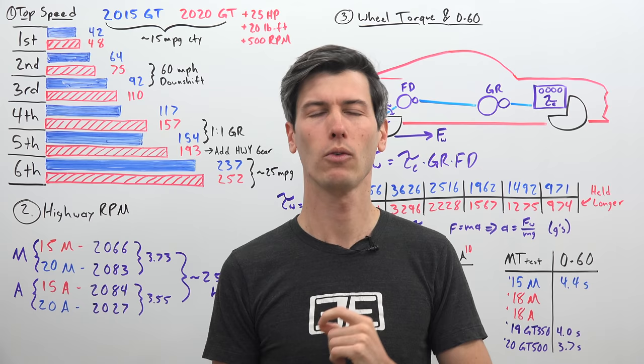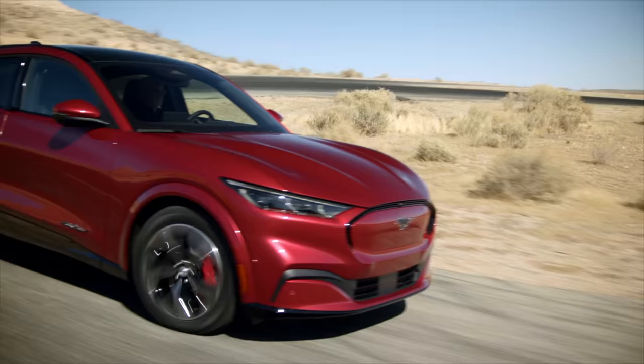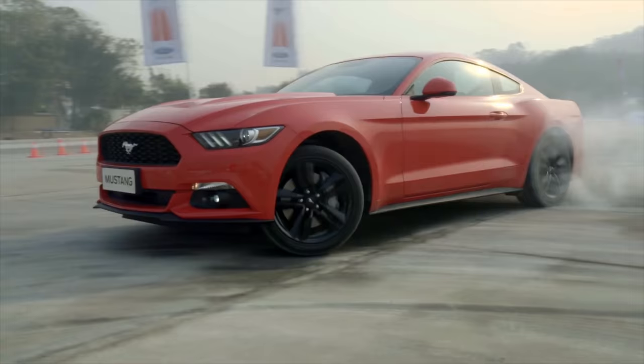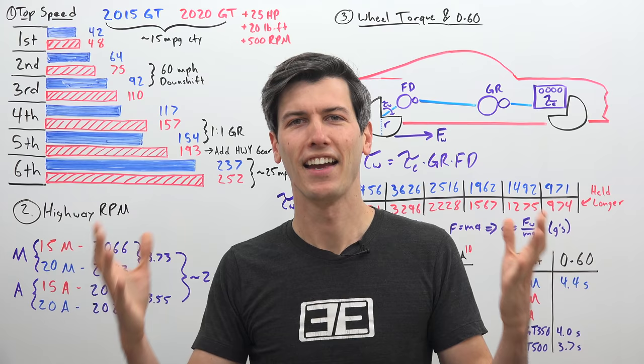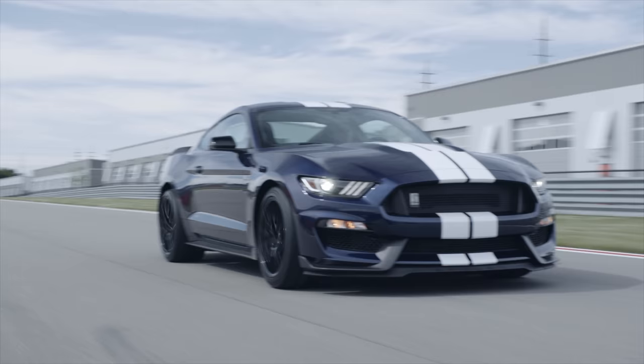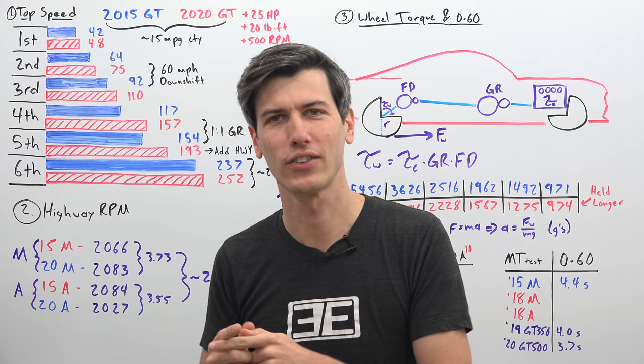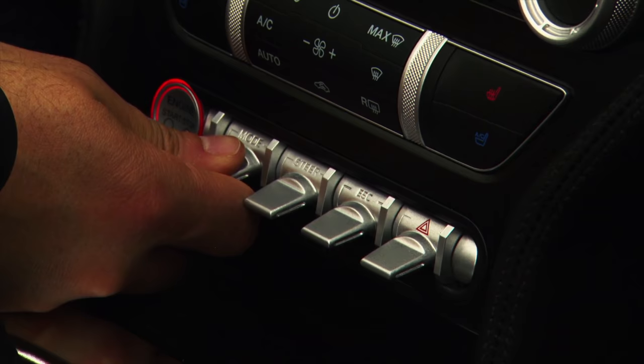So then you might think, well, what about a Fiesta ST, also a super fun car, manual transmission. Also, they're not selling that anymore. So you are left with the Mustang. No, not that Mustang, the other Mustang. And the good news is there's still a lot of variants within the Mustang family that you can still get a manual transmission in. Unfortunately, as of 2018, I feel like they kind of ruined that manual transmission. And so that's what we're going to be discussing in this video.